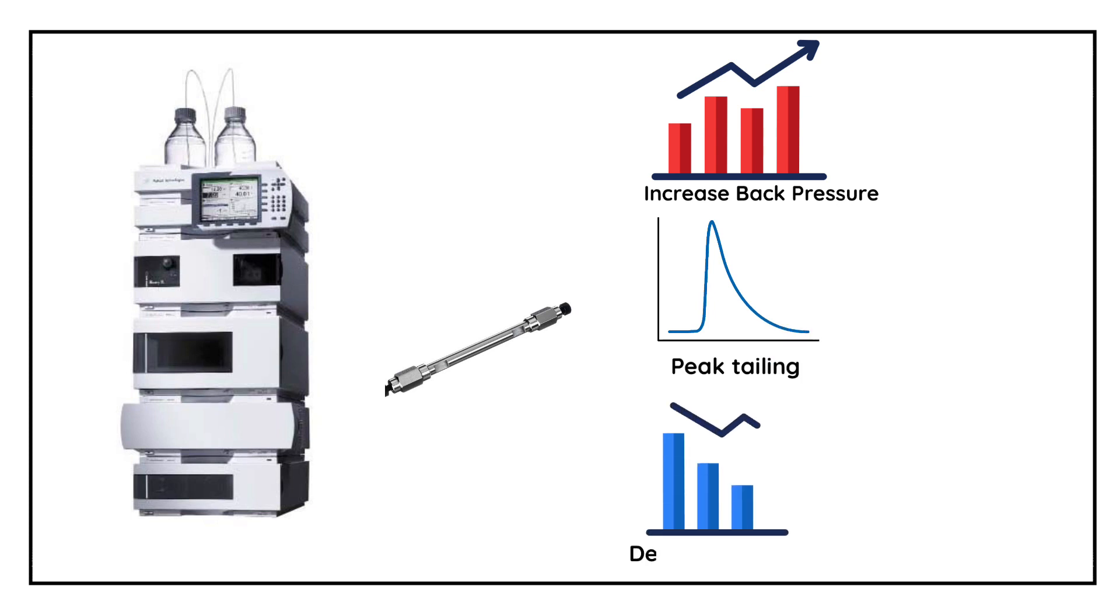During HPLC analysis, there are certain symptoms which will give you the indication that there is something wrong with the HPLC column. For example, increased column back pressure, peak tailing, decrease in the theoretical plate count, peak broadening, and loss of selectivity.